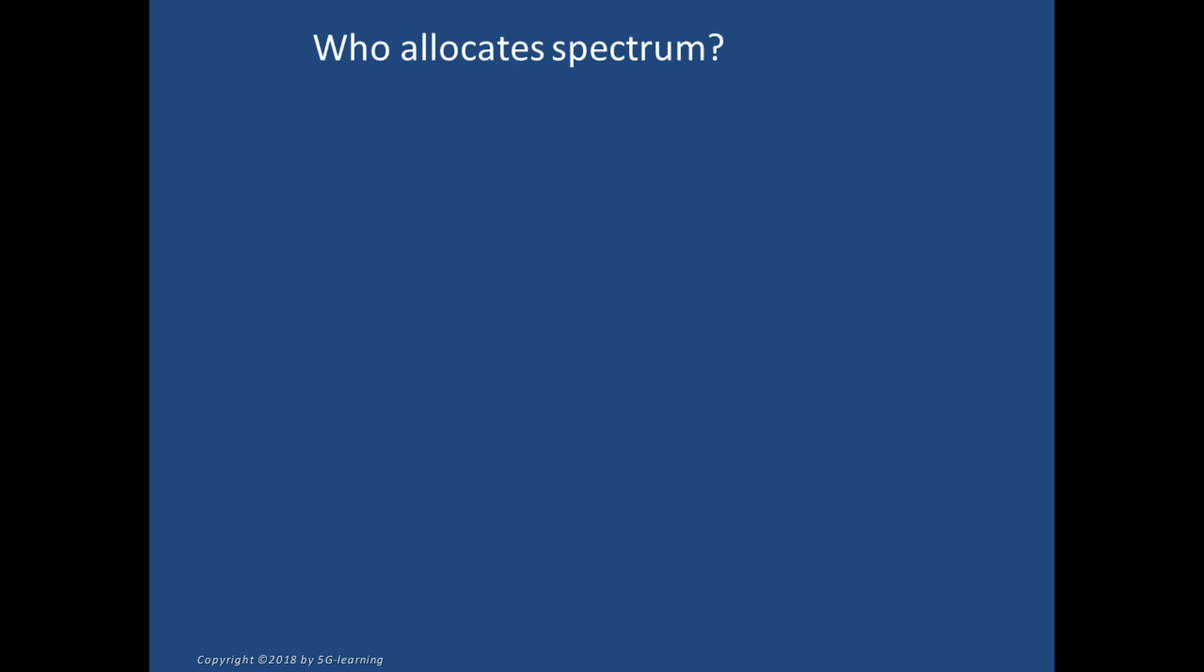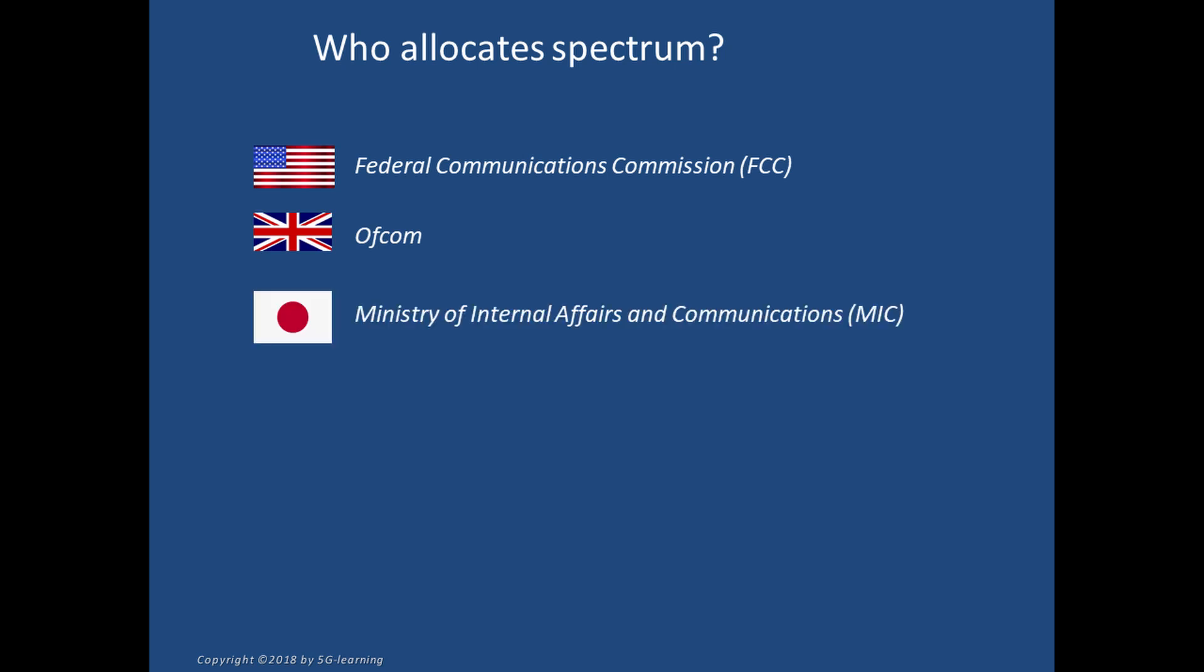Spectrum allocation is the domain of government agencies, for example the Federal Communications Commission in the USA, Ofcom in the United Kingdom, the Ministry of Internal Affairs and Communications from Japan, the Frequencies National Agency ANFR in France, and the State Radio Regulation Bureau from China.